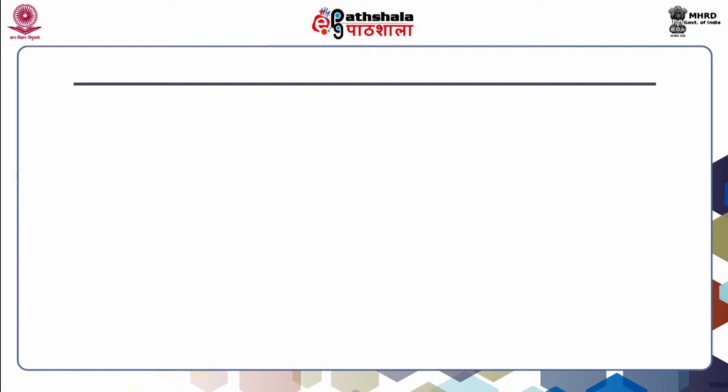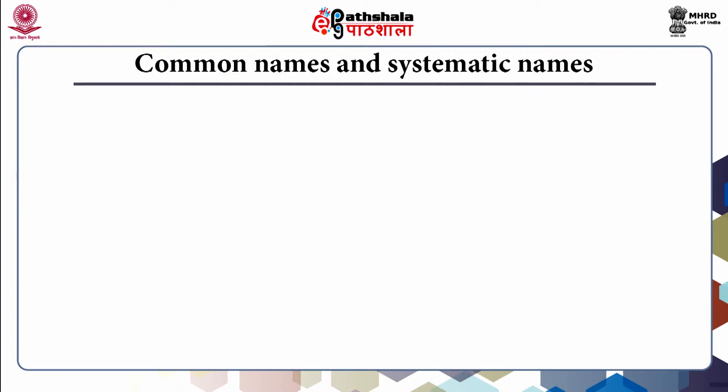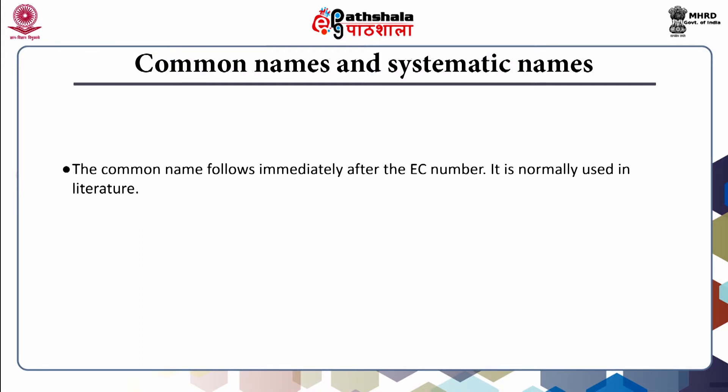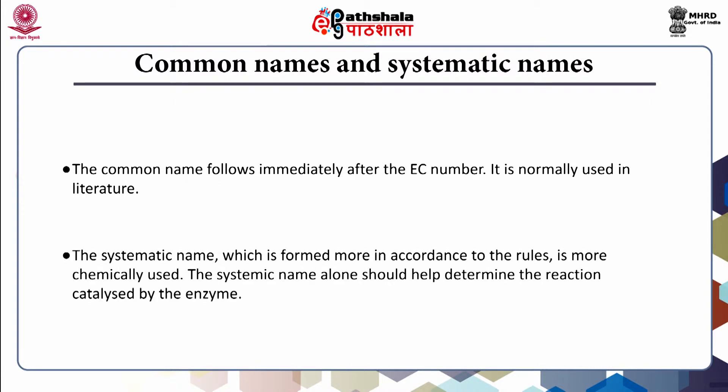The common name follows immediately after the EC number and is normally used in literature. The systematic name, which is formed more in accordance with the rules, is more chemically precise. The systematic name alone should help to determine the reaction catalyzed by the enzyme.